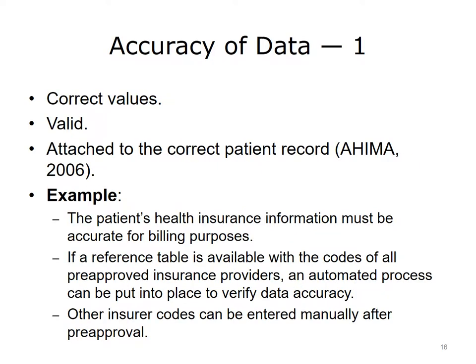Accuracy is a term used to refer to the extent that the data properly represent the real-life objects they are intended to represent. Accuracy implies that the value is valid and correct, and the person who the value is related to is properly assigned. Accuracy can result from deficiencies in other attributes that we will be discussing later on. A lack of precision or completeness can also influence the accuracy of the data and the answers to the questions you intend to find through the use of that data. Data quality impacts not only clinical care — payment for appropriate care rendered is critical to the survival of any provider in all care settings. During the registration process, insurance information must be gathered and validated.